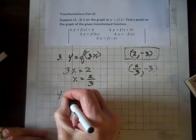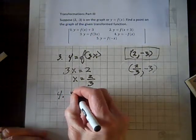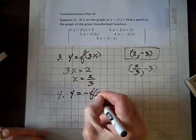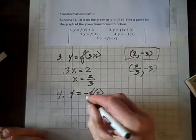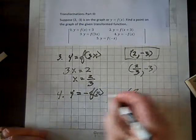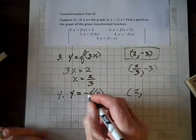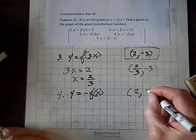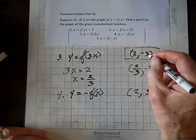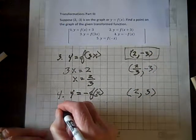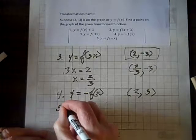So, let's look at 4. y equals negative f of x. And so, there's going to be no change in the horizontal coordinate, but when we multiply the y coordinate by a negative, that just means change the sign, because negative times a negative 3 is a 3, and there's our new transformed ordered pair.